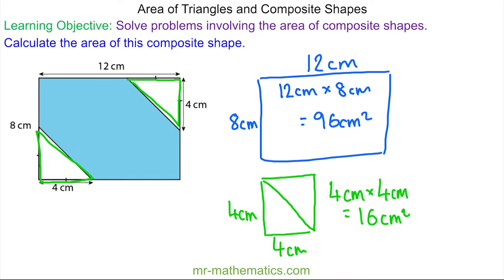To work out the blue region, we've got the rectangle which is 96 centimeters squared, take away the two triangles which add to make 16 centimeters squared. So the total area is 80 centimeters squared.